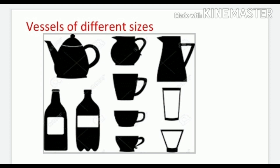Ya phir utensils bhi bolte hain jo hum kitchen mein use karte hain un bartan ko, right? Aap dekhiye picture mein bahut saare container hain. Vessels are there in front of you. Aap dekhiye first one kaunsi hai? Ketli hai na? Kettle bolte hain use English mein. And bottles are there. Jugs are there and mugs are there.